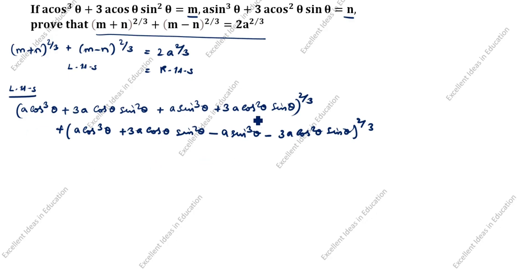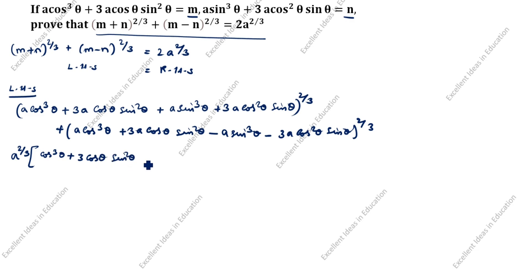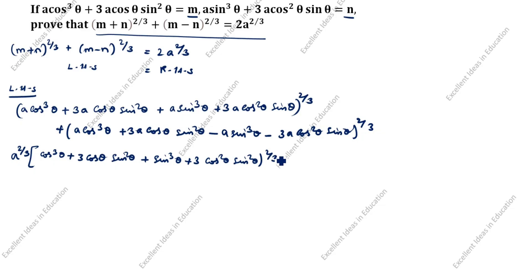You see here, 'a' is common in both terms. So we will take it outside as a^(2/3). This applies to both the (m+n) and (m−n) terms.